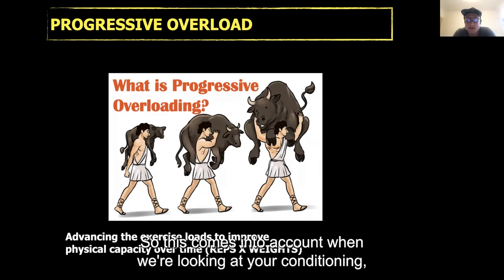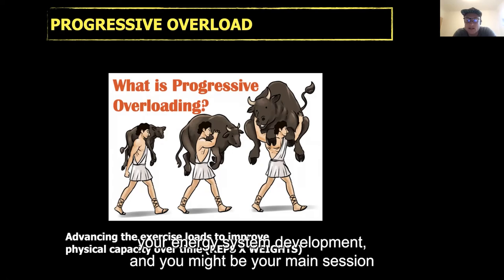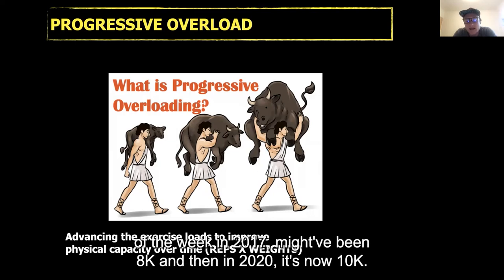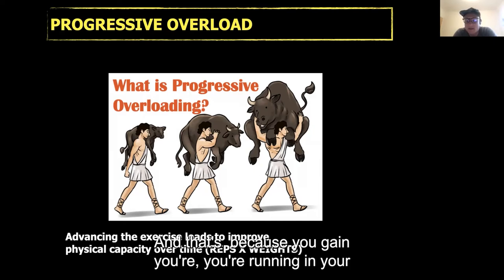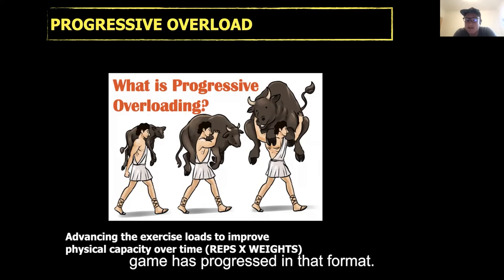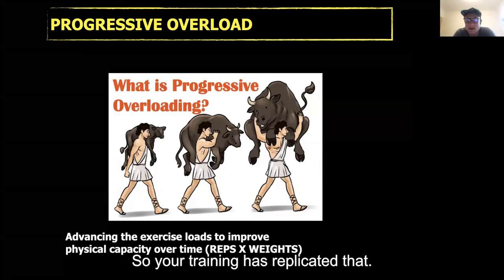This comes into account when we're looking at your conditioning and your energy system development. Your main session of the week in 2017 might have been 8K, and then in 2020 it's now 10K — because your running and your game has progressed in that format, so your training has replicated that.